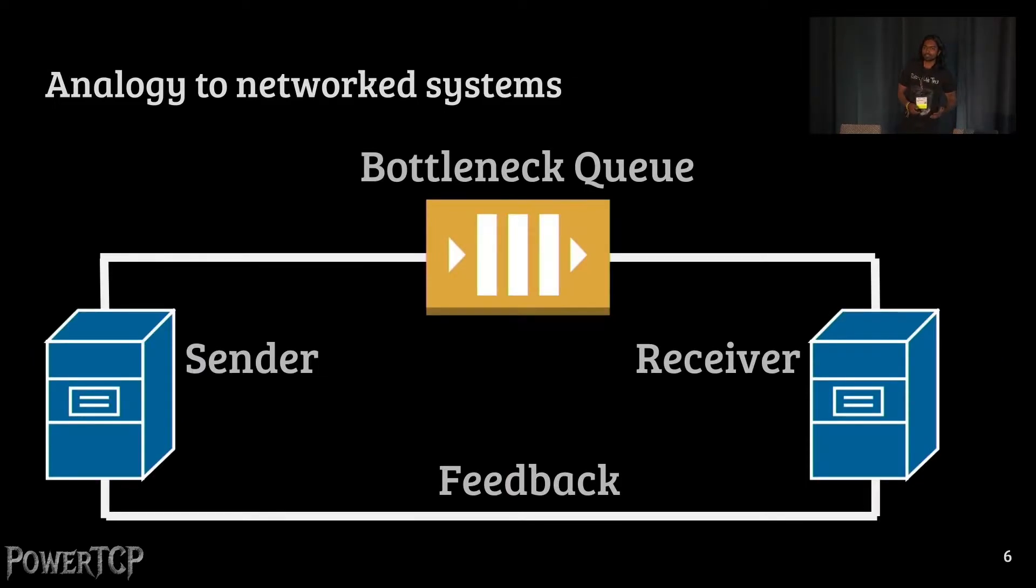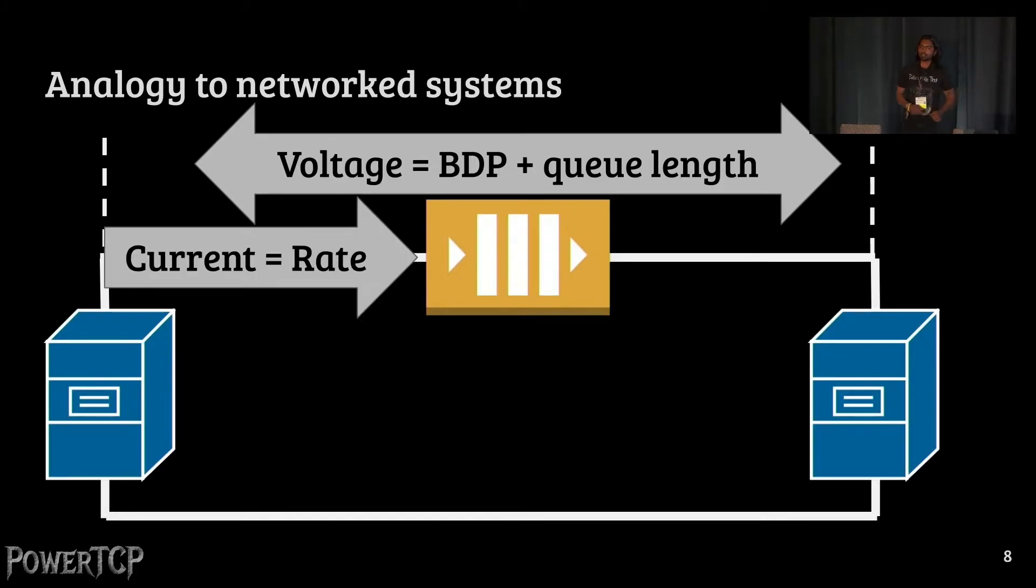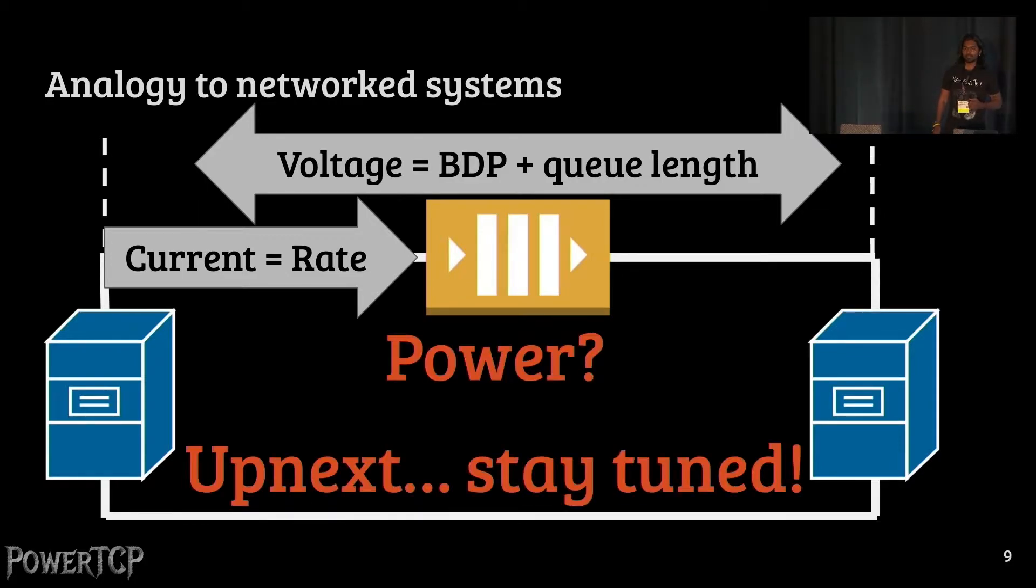Similarly, we draw analogy to network systems in this work, where there's a sender on one side, receiver on the other side, and a bottleneck queue along the path. We define voltage as the sum of bandwidth delay product and the bottleneck queue length. A current flows through the network as well, which is related to the total transmission rate. During this presentation, I will briefly introduce the notion of power, so stay tuned for it.